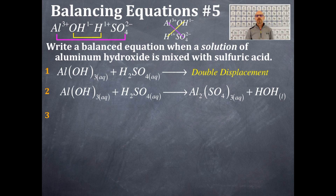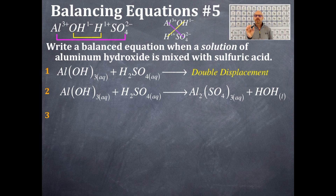How many aluminums on the product side? Two. How many on the reactant side? One. So I put a two-stoichiometric coefficient in front of aluminum hydroxide on the reactant side. Then looking at aluminum sulfate on the product side — how many sulfurs? Three. Looking at H₂SO₄ — how many sulfurs? One. So I need a three-stoichiometric coefficient in front of sulfuric acid.